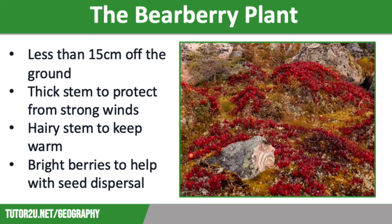An example of a plant that thrives in cold environments is the bearberry plant. It is less than 15 centimetres off the ground with a thick stem to protect from strong winds. It has hairy stems to keep warm and small, bright, leathery green leaves to maximise photosynthesis and retain moisture. It also has bright red berries which attract birds who help with seed dispersal.